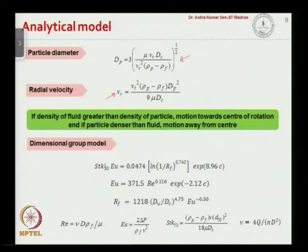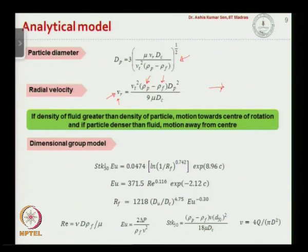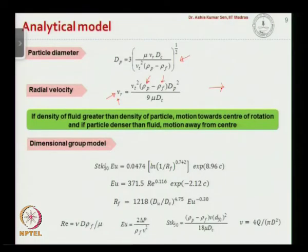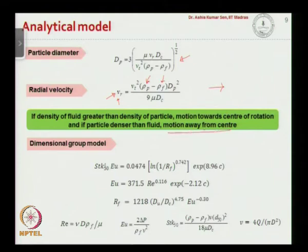If the density of the particle is larger than the density of the fluid, the particle is subjected to a positive radial force in the outward direction. For most bioparticles encountered in microfluidics, the particle density is greater than the fluid density, so they experience net positive radial velocity, separating them toward the hydrocyclone wall. If fluid density is greater than particle density, the motion is still outward toward the periphery.